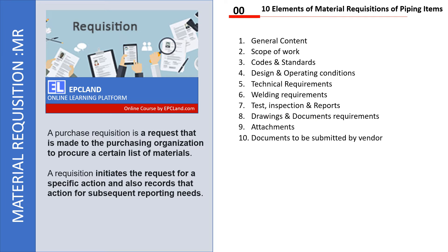It will also include drawings and document requirements — what kind of drawings and documents will be submitted by the vendor at what stage of the project — along with attachments relevant to that particular MR. Once these 10 elements are covered, the MR is ready and can be shared first with the procurement team, who will then share the same requirements with the vendors to get the desired piping items.